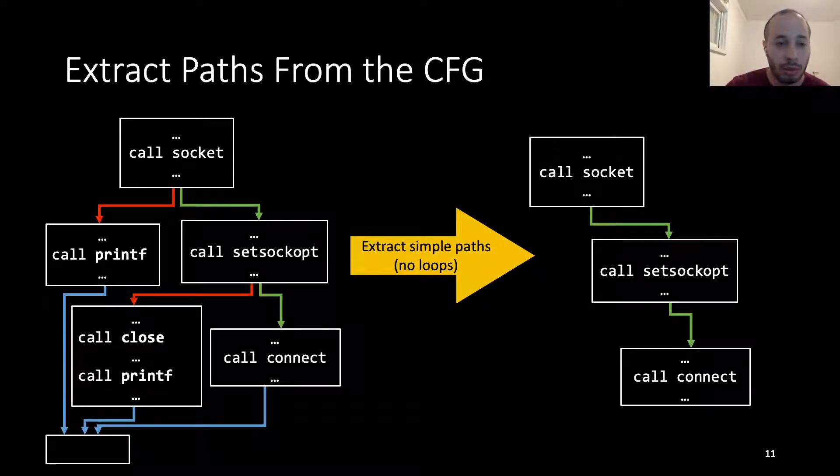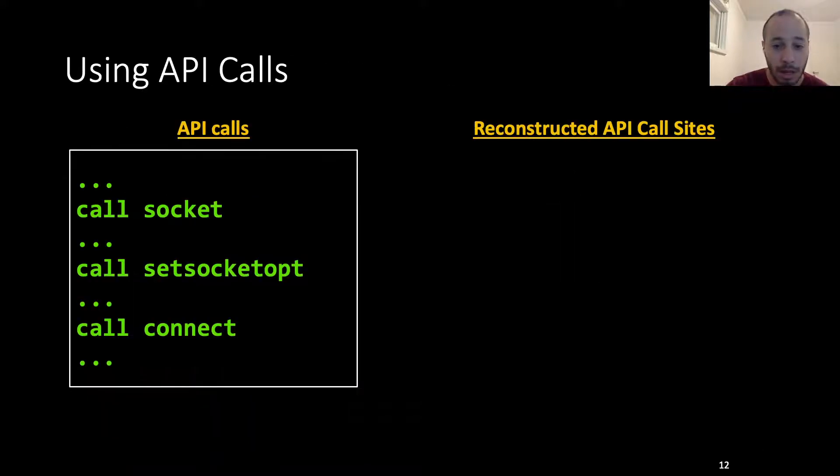At first, we will extract paths from the CFG. These are simple paths without loops. We will stitch their basic blocks together into one instruction sequence. Examining this sequence, we see that the API calls would appear again and again in the different procedures and different executables. This makes them a good anchor for our presentation.